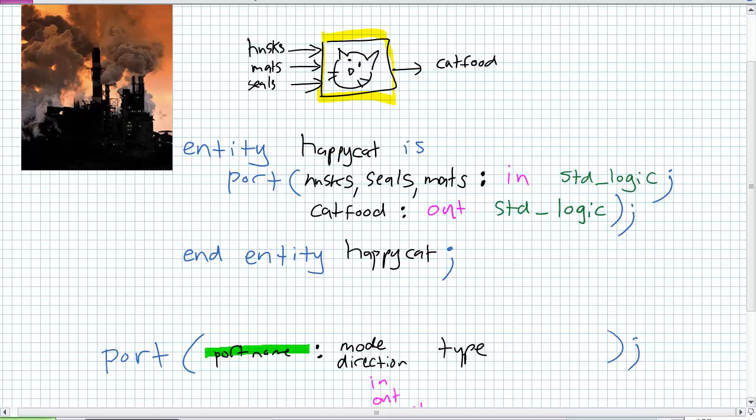Since that's the last port that I'm going to define, I'm going to close this thing up. So what I've got is port parentheses. What are my ins? Husks, comma, seals, comma, mats, colon. What direction are they? They're all ins. What type are they? They're all standard logic. Semicolon. Go to the next one. I'm making it a little bit more readable, because now I'm going to define my fourth port, which happens to be an out. It's cat food, the name of it, colon. What is its direction? It's an output port. What type is it? It's standard logic. I'm going to close up the parentheses. Notice I did not put a semicolon there, because my last port, close up the parentheses. Now put the semicolon after, because I am ending the port statement.